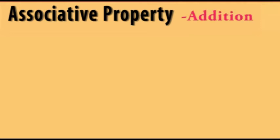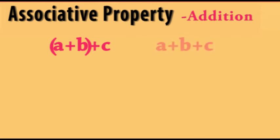Now we are going to discuss associative property of addition. This property states that if we want to add two or more numbers — say a plus b plus c — it doesn't matter how we group them. We may group them in different ways, but the sum of both groupings will be equal.